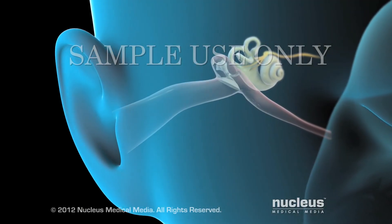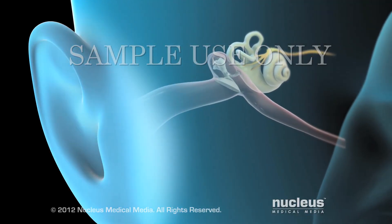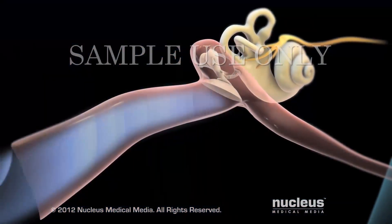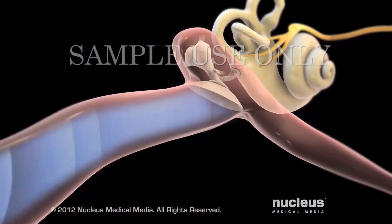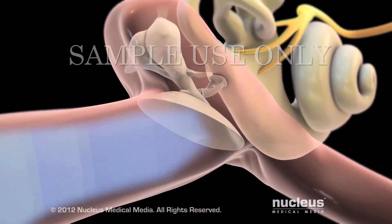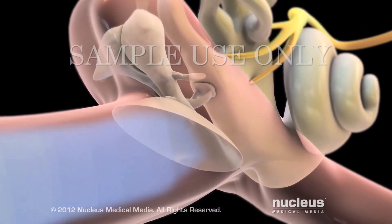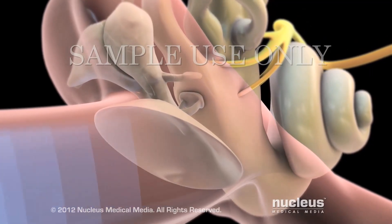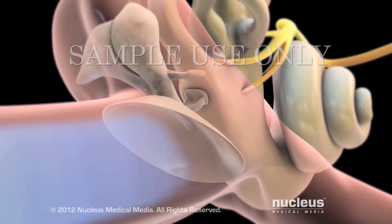The outer ear includes the pinna, which collects sound waves, and the ear canal, which transports sound waves to the eardrum, a paper-thin layer of tissue separating the outer and middle ear.